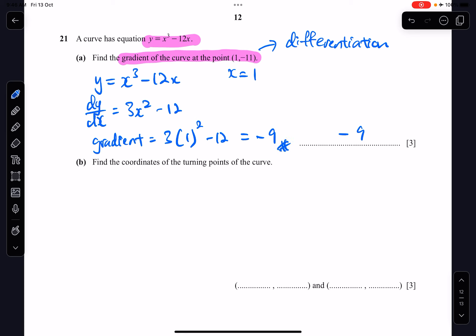Now for part B, find the coordinates of the turning points of the curve. So when I want to find the coordinates of the turning points of the curve, I need to know that for the turning points, I have the information that my dy dx will be equals to 0.